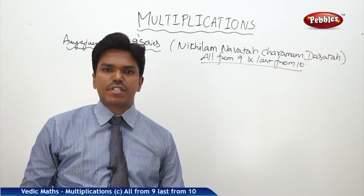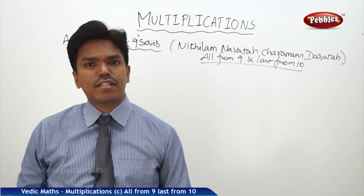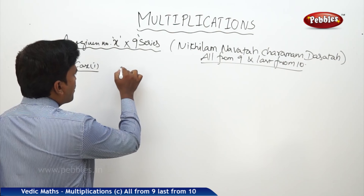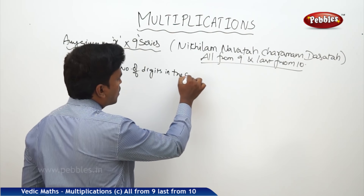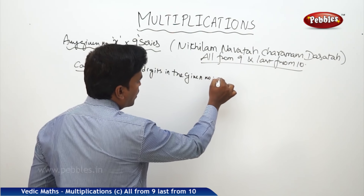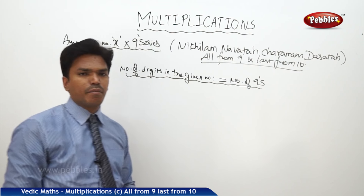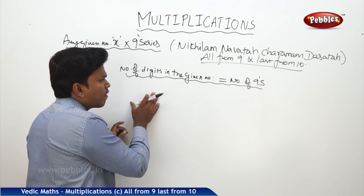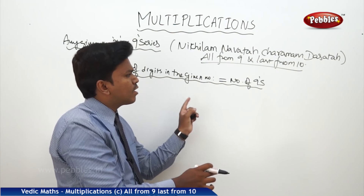In this multiplication technique we have three cases. Let us discuss the first case. Case 1: the number of digits in the given number is equal to the number of nines. That means whenever we are multiplying a number, the number of digits in the given number is equal to the number of nines on the other side.